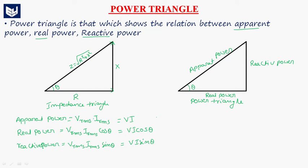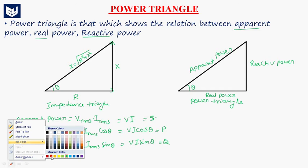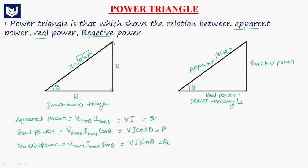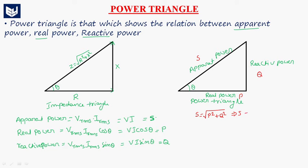We represent apparent power with the letter S, real power with the letter P, and reactive power with the letter Q. From the power triangle, we can write S is equal to the square root of P squared plus Q squared. Alternatively, S is equal to P plus jQ.